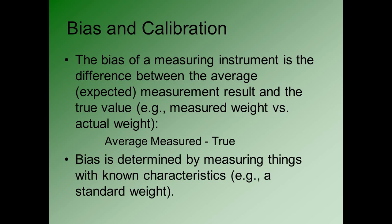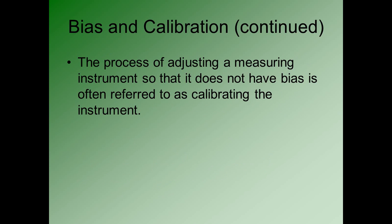Bias can only be determined by measuring something of a known characteristic. So if we're dealing with weight, we measure something with a known weight — and that's the only way you can determine the bias. The process of adjusting a measuring instrument so that it does not have bias is referred to as calibrating the measurement instrument.